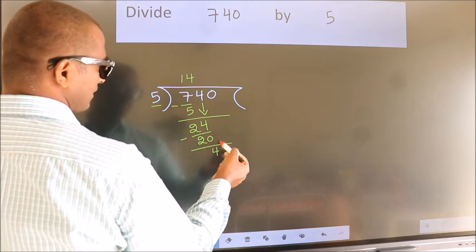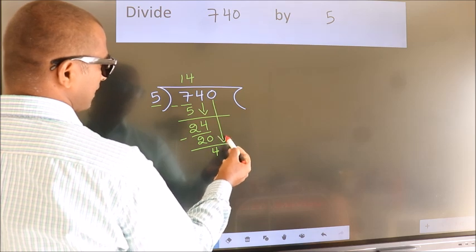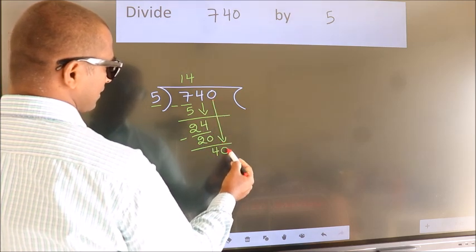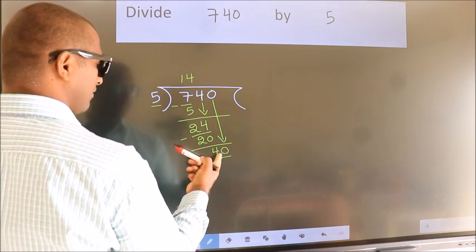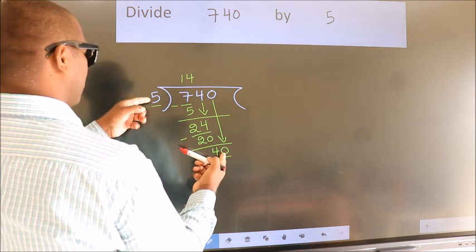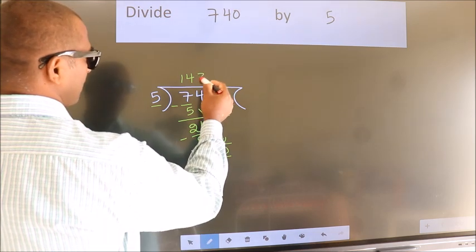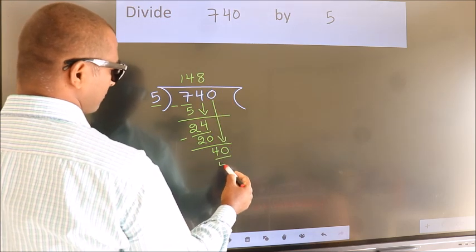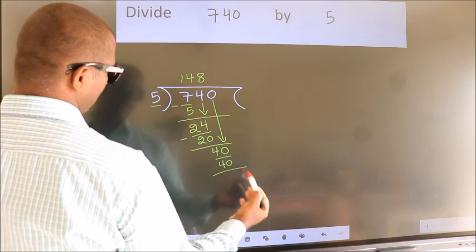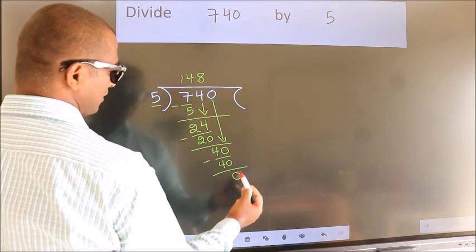After this, bring down the beside number. So, 0 down. So, 40. When do we get 40? In 5 table, 5 eighths 40. Now we subtract. We get 0.